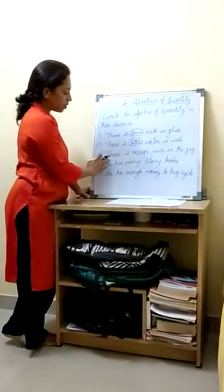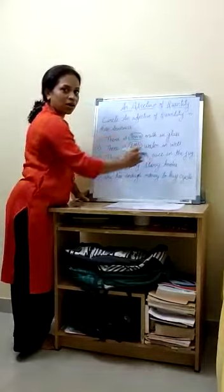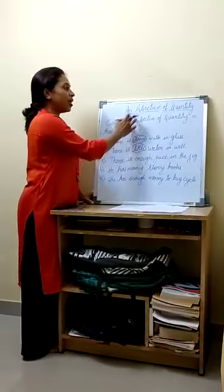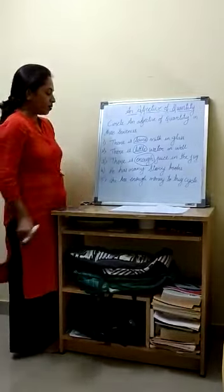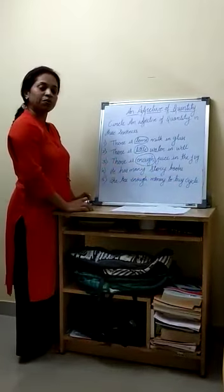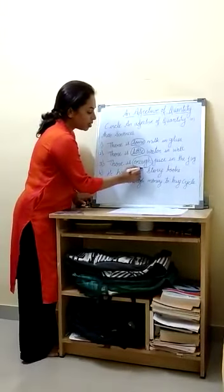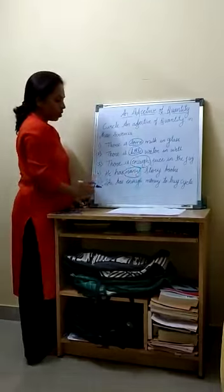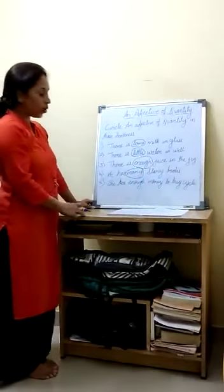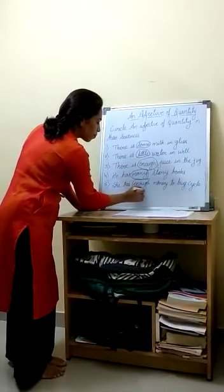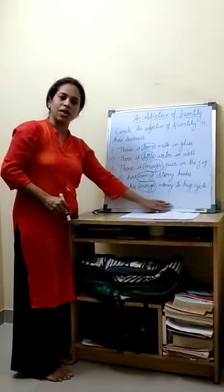Move to the next sentence: there is enough juice in the jug. Enough is the adjective of quantity. Next: he has many story books. In this sentence, is story books the adjective of quantity? No. Many is the adjective of quantity. Next: she has enough money to buy a cycle. Enough is the adjective of quantity in this sentence.